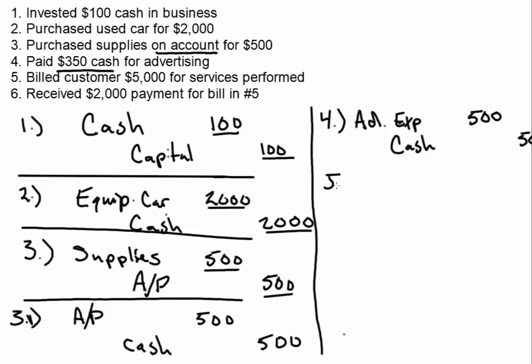Number five: billed customer $500 for services. When we're only billing them, that means we have not received the actual payment yet, so there's no cash in this transaction. We do have an asset though, because they owe us money — that's accounts receivable. Accounts receivable for $500. And then an asset going up means we have to balance this transaction, and in this case it's equity in the form of revenue — service revenue — for $500. That's our journal entry.